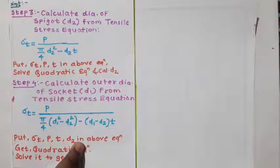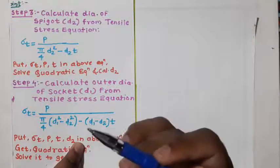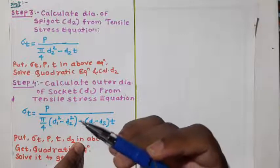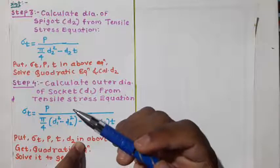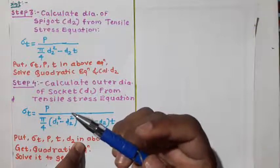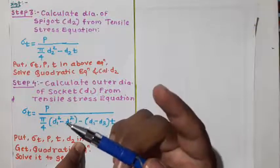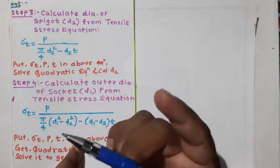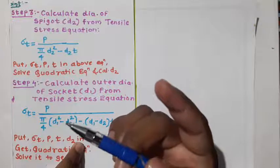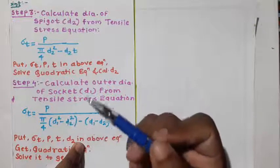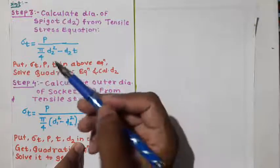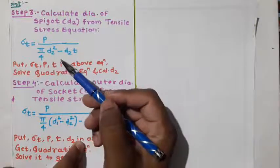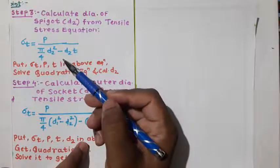After calculating force P, let us move to the next part of this solution. In the solution, we have to determine four parameters: D1, D2, D4, and C. Out of these four, first of all we will focus on D1 and D2.